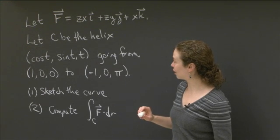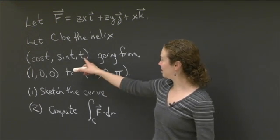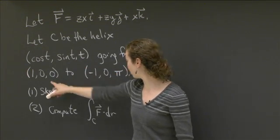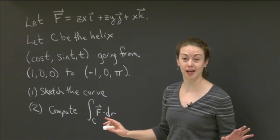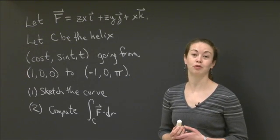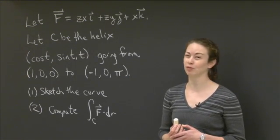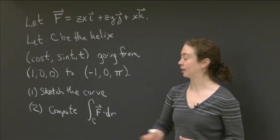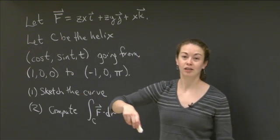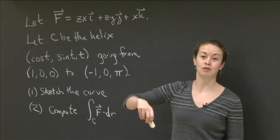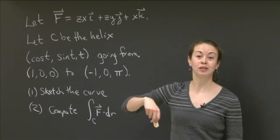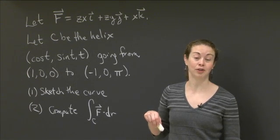If you notice, the first thing that's helpful for sketching the curve is that I know immediately what the parameters are in t. T is ranging from 0 to π. In order to draw this curve, I'm going to give myself a frame of reference. All of the points (cost, sint, t) lie at radius 1 in the xy distance from the origin. In terms of x and y, they're all going to sit on the boundary of a cylinder of radius 1.